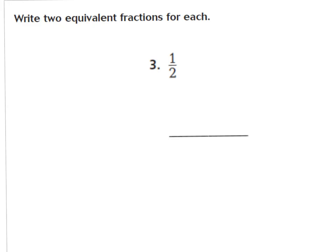Number 3 is the fraction 1 half. We need to find two equivalent fractions for 1 half — two fractions that are equal to 1 half. I can use multiplication to find this: multiply the denominator and the numerator by the same number, and that will give me an equal fraction. I'm going to choose the number 4. So 2 times 4 gives me 8 as my denominator, and 1 times 4 gives me 4. So 4 eighths is equal to 1 half.